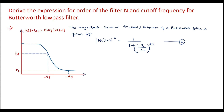Here kp is the passband edge attenuation, ks is the stopband edge attenuation, ωp is the passband frequency, and ωs is the stopband frequency, plotted against ω.